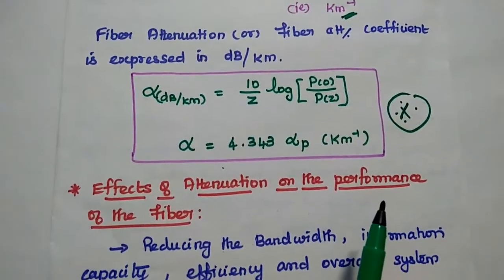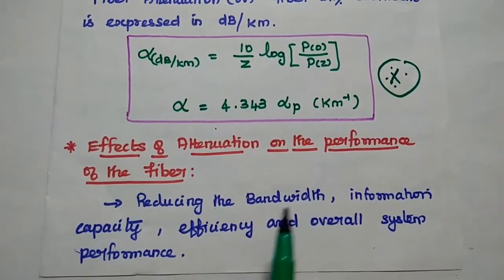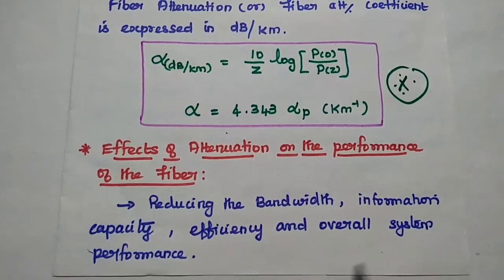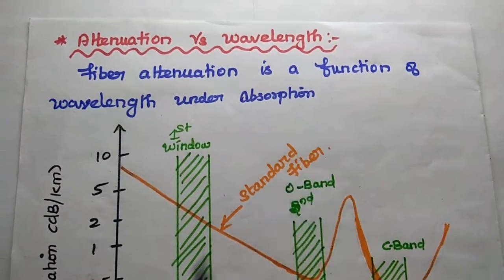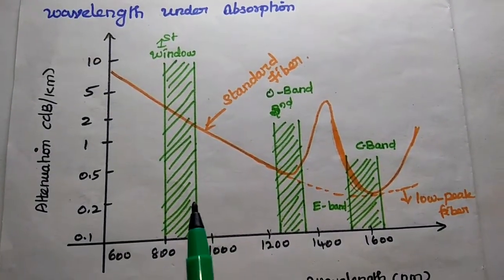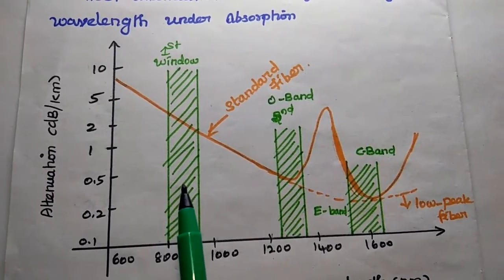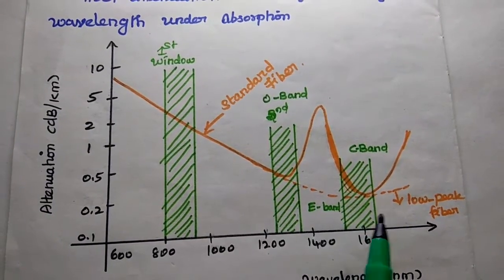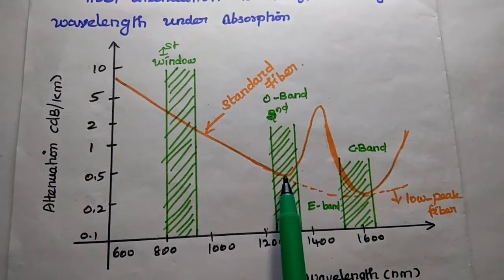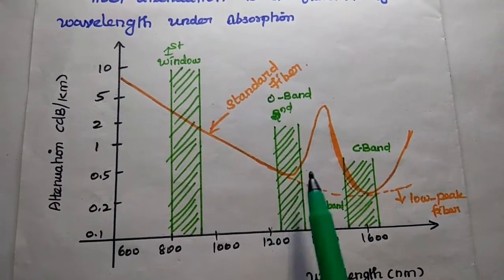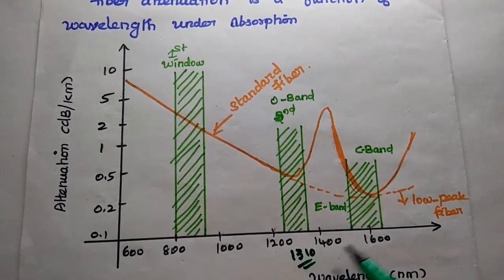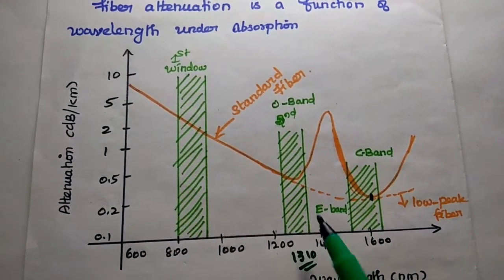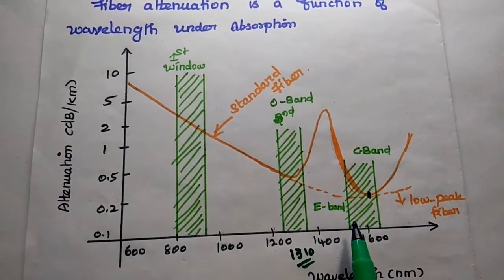The major effects of attenuation on the performance of fiber include: reducing the bandwidth, reducing the information capacity, efficiency, and overall system performance. Next, attenuation as a function of wavelength — we consider three transmission windows in this wavelength range. The first window is the short wavelength range, the second is medium wavelength, and the third is long wavelength. The attenuation value is 0.5 dB/km at 1310 nanometers and 0.25 dB/km at 1550 nanometers. These two windows are widely used in many applications and these values are standard single mode fiber values.